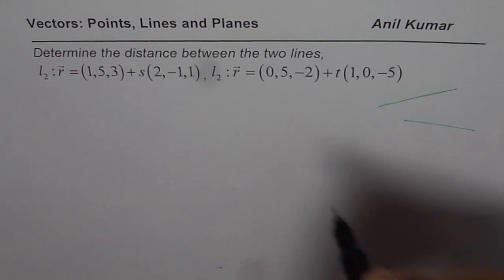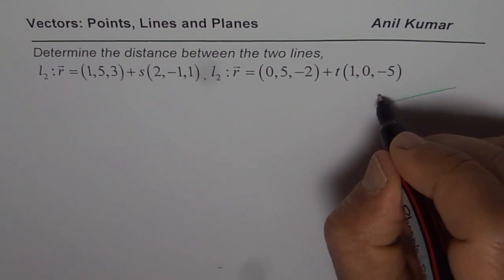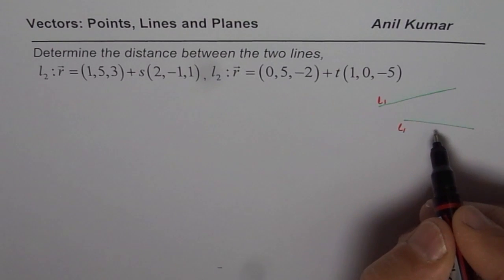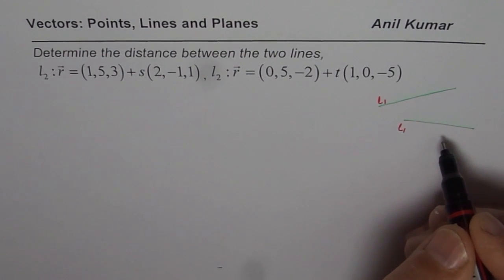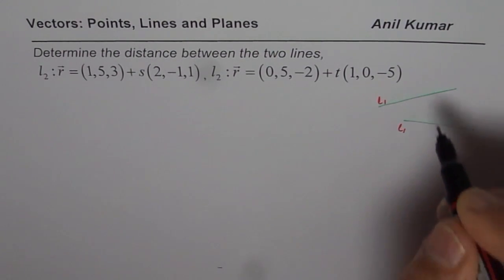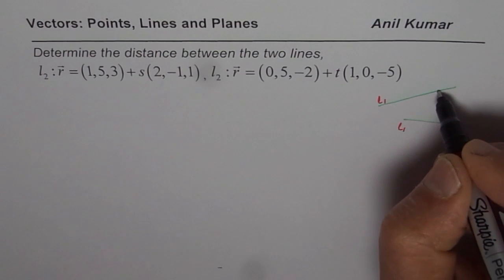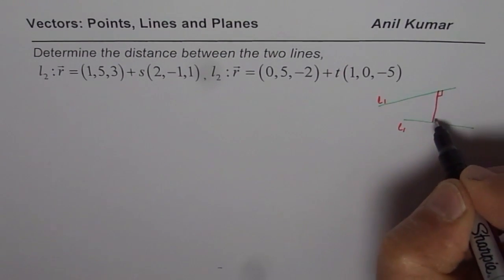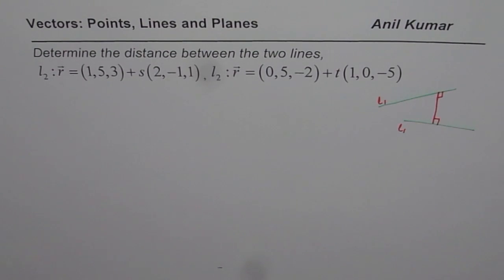Let us say we are given these two lines, L₁ and L₂. I am just labeling for simplicity. Then, distance between these two lines should be the common perpendicular between them. So, we are looking for a perpendicular line to both of them. This is what we are looking for. So, that will give us the distance between the two points.